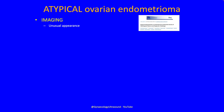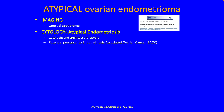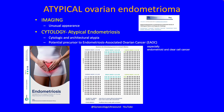Atypical endometriomas can be identified on imaging or on cytology. On cytology, atypical endometriosis refers to cytologic and architectural atypia, and it's worrying because it can be a potential precursor to endometriosis-associated ovarian cancer, especially endometrioid and clear cell cancer. The ESHRE 2022 guideline described that the lifetime absolute risk of ovarian cancer is 1.3 in 100, whereas in a patient with endometriosis the risk is nearly double at 2.5 in every 100 — still a very low overall risk.